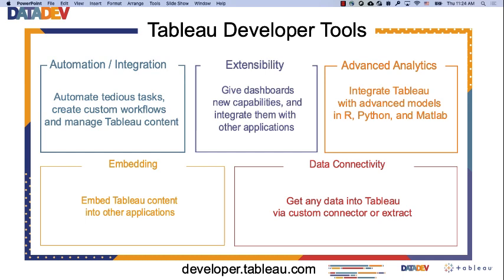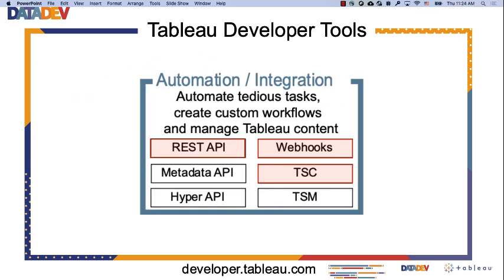We already did an episode on extensibility that you can rewatch, and we are going to do more episodes on these different categories of integrations. But today we are going to talk about automation and integrations - we are going to dig into three tools: the REST API, TSC, and webhooks.